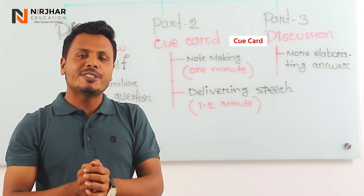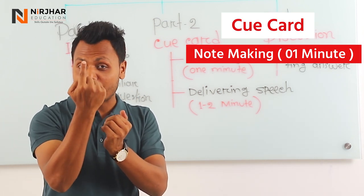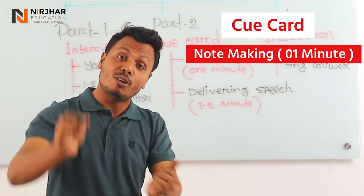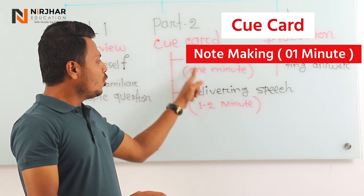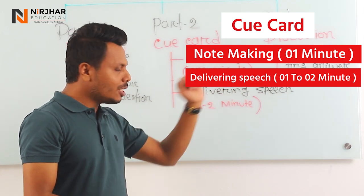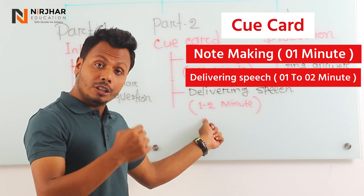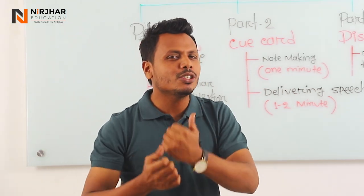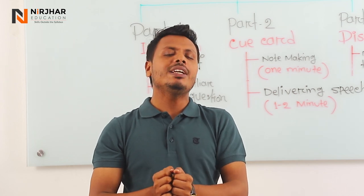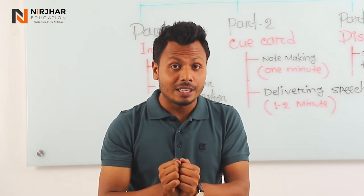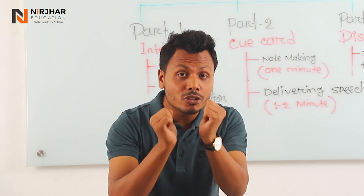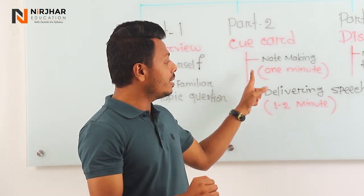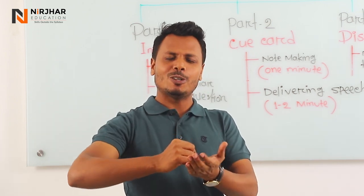In the Cue Card section, you are given one minute to prepare and make notes, and then you deliver your speech. The one minute is for thinking about what you are going to say on that topic. As a candidate, you have to speak for 2 minutes.